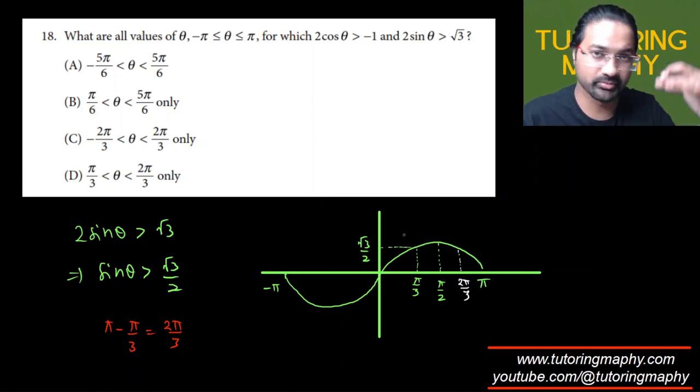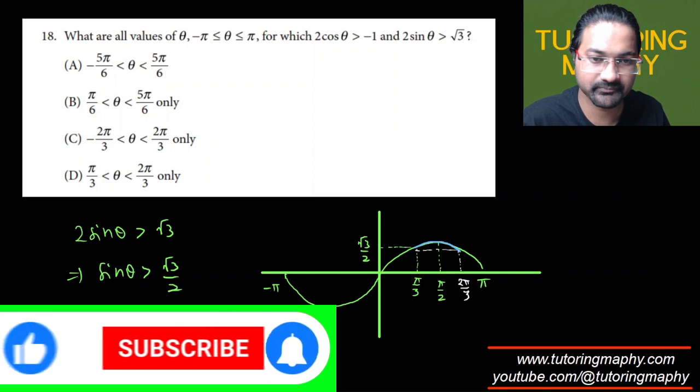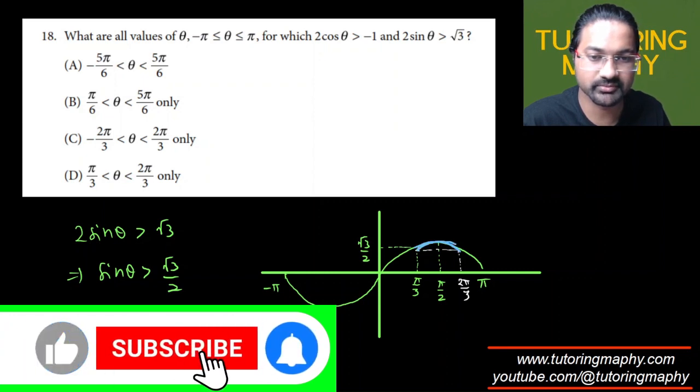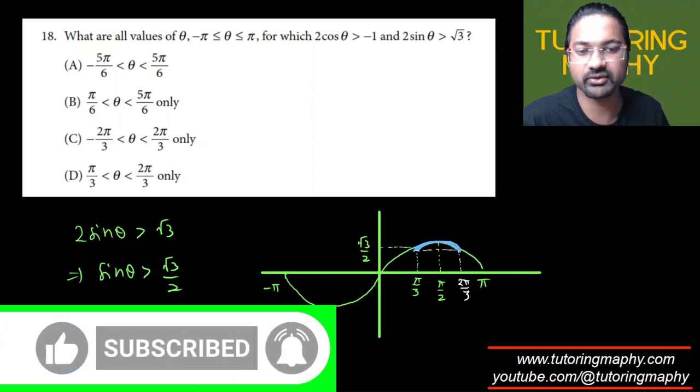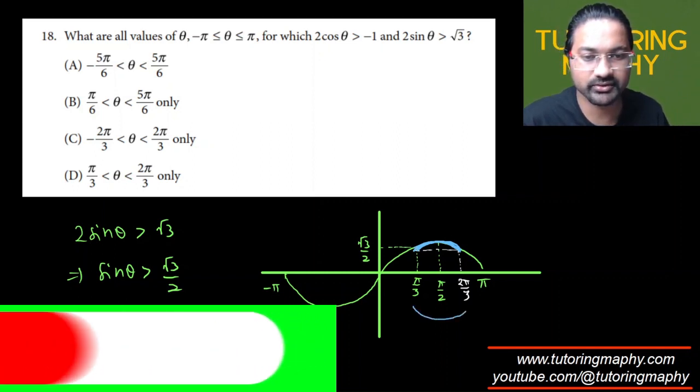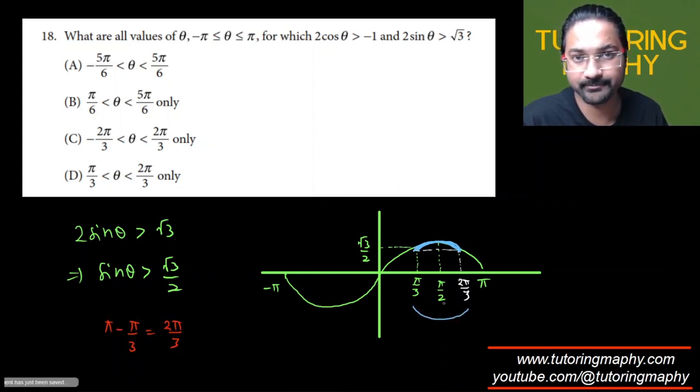We want that to be greater than root 3 over 2, which definitely means that we want it to be this. We want it to be this because this is the region where it is greater than root 3 over 2. So our answer is pi over 3 to 2 pi over 3. Correct? Pi over 3 to 2 pi over 3.